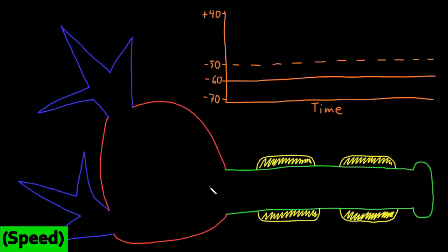In this video, I want to talk about the action potentials of neurons. Here we have our neuron with her soma in red, and a larger than normal axon in green, and now I've drawn a myelin sheath in yellow around the axon, and a couple of larger than normal dendrites in blue, and here's our graph with the membrane potential on the y-axis and time on the x-axis.